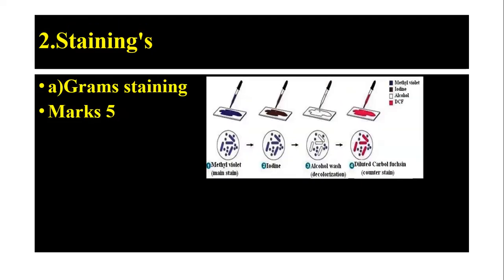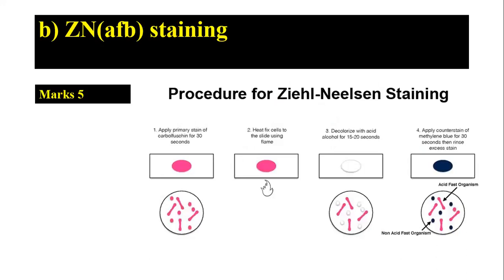The second exercise is staining. Two stainings are given: A is Gram staining and B is Ziehl-Neelsen staining. For Gram staining, you perform the staining, focus the slide, then draw the observation, inference, and results — carrying five marks. The same applies for Ziehl-Neelsen staining: perform the staining, focus, and draw the diagram with observation and inference, also for five marks.